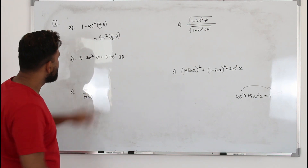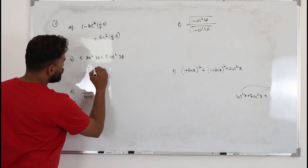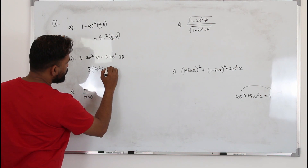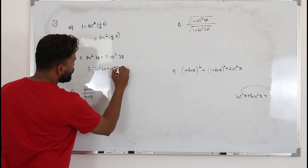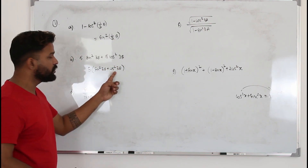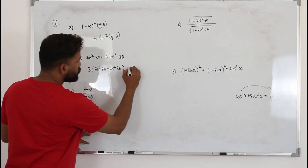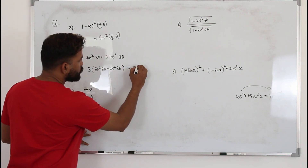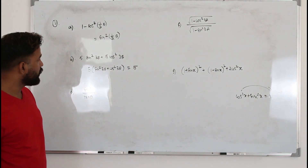For the next part, take 5 as a common factor. You will have 5(sin²3θ + cos²3θ). We know sin²3θ + cos²3θ equals 1, so 5 times 1 is 5.